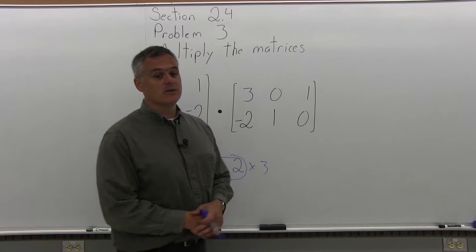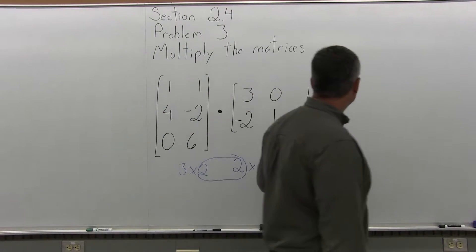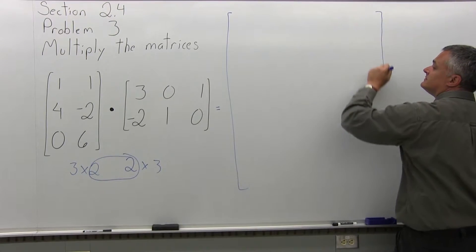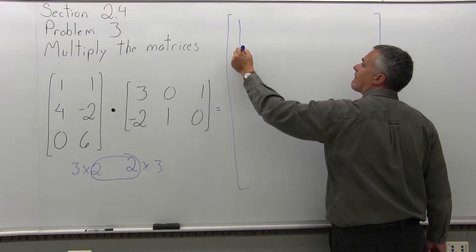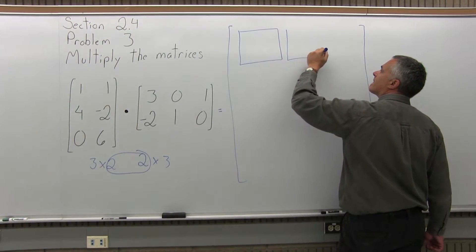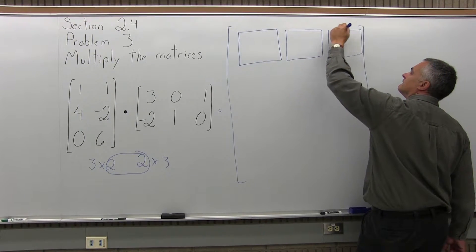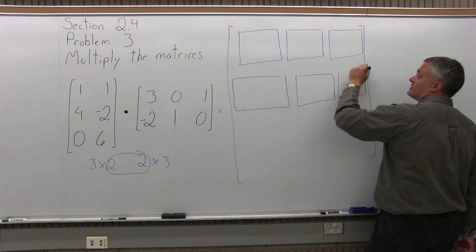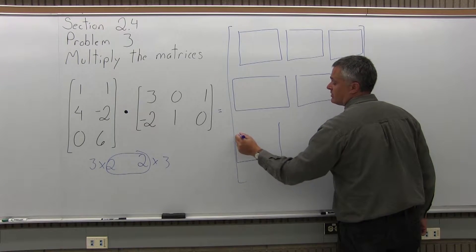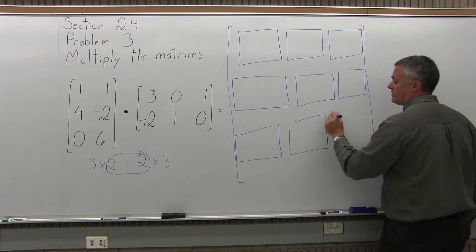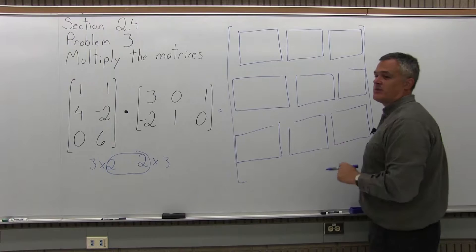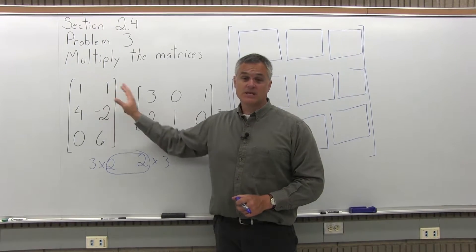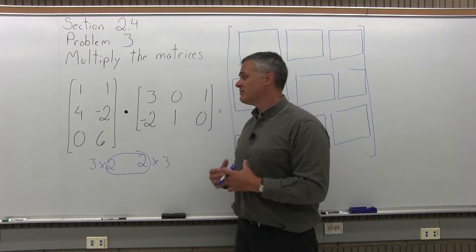Not only is there a solution, but the outer numbers, both being 3, tells me the solution will have dimensions 3 by 3 — 3 rows and 3 columns. So I'll make a matrix with some big boxes to write my work in, giving me 9 boxes for my 3 rows and 3 columns. After I finish the work I'll write one smaller matrix with just the answers. To fill these boxes in, we multiply each row of the first matrix times each column of the second matrix.